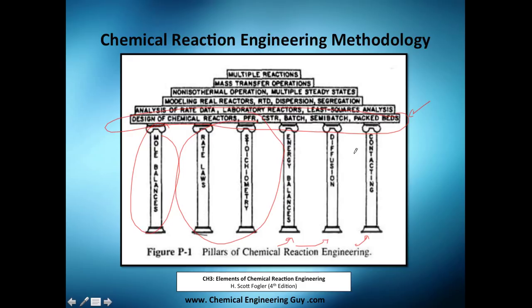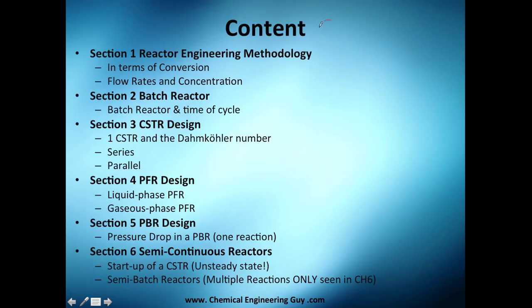Actually, let me show you the content of this chapter, chapter number four. I just broke it into section one, which is reactor engineering methodology. We're going to see how to design isothermal reactors. How to account for a PBR or a PFR, CSTR. When is it convenient to use conversion, and when is it convenient to use flow rates or even concentration? I think concentration is always a goal. So if you have problems that you have no idea, just go with concentration and you will be okay. Of course, you will need to use the stoichiometric tables.